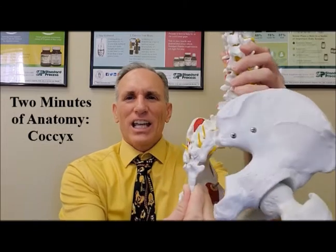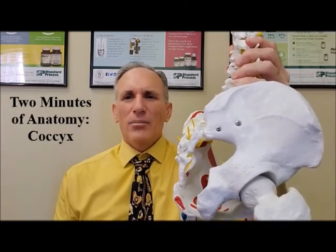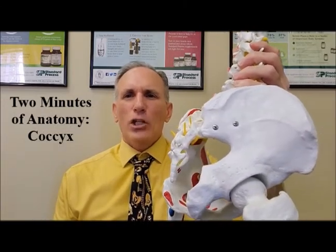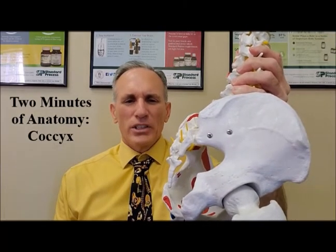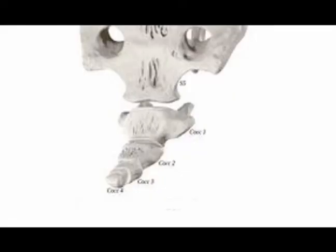The name coccyx is a Greek word and it means beak of a cuckoo bird because when viewed from the side the coccyx resembles the beak of a cuckoo bird. The coccyx is the most inferior region of the spine.